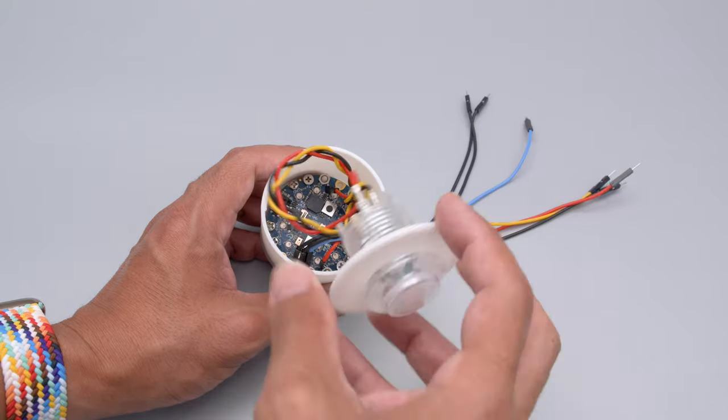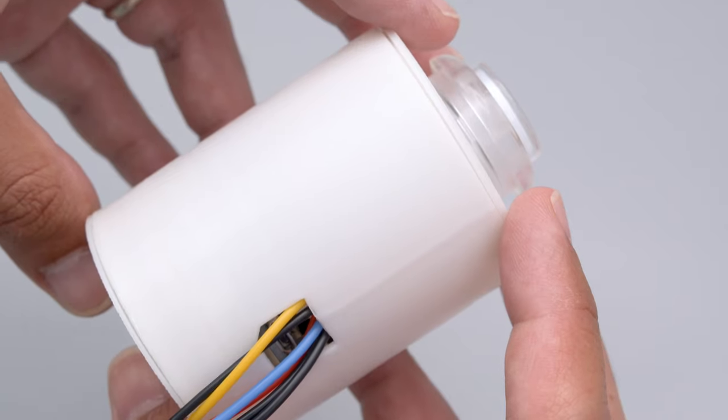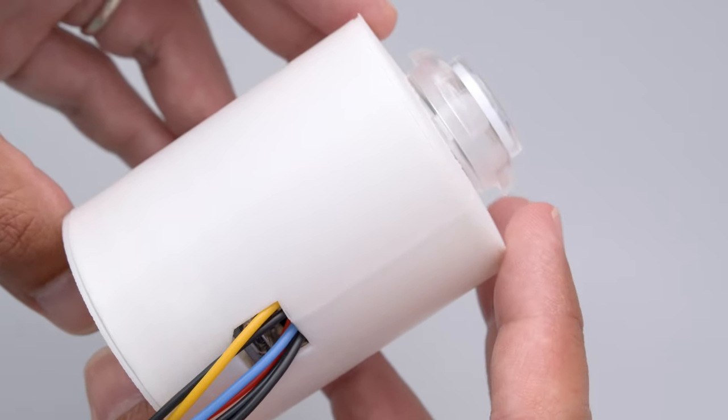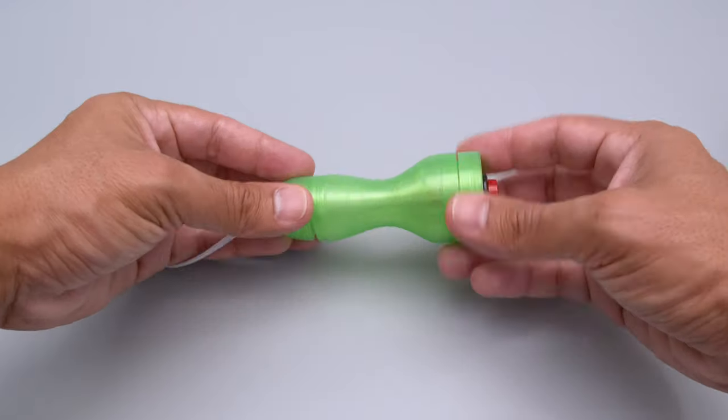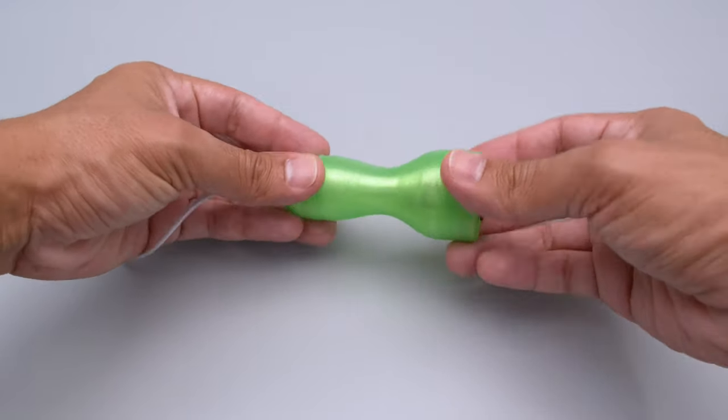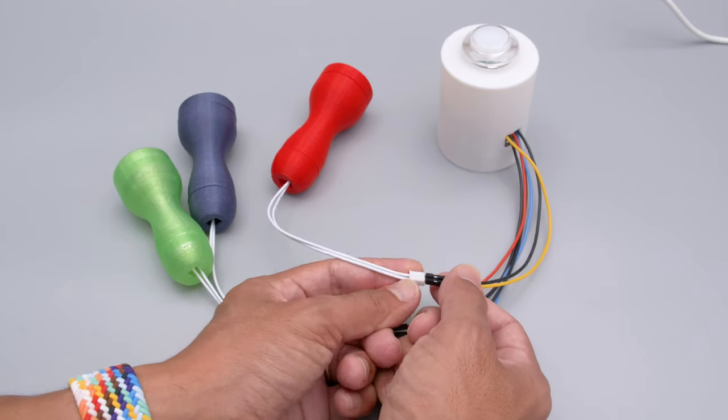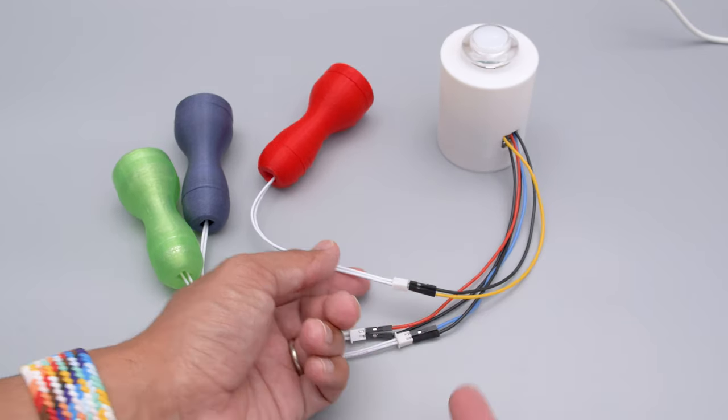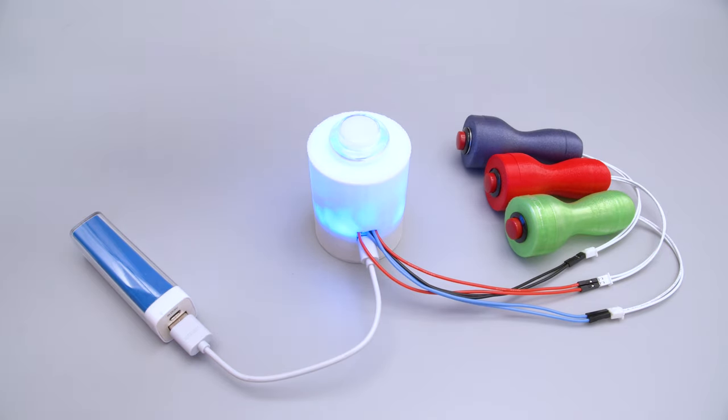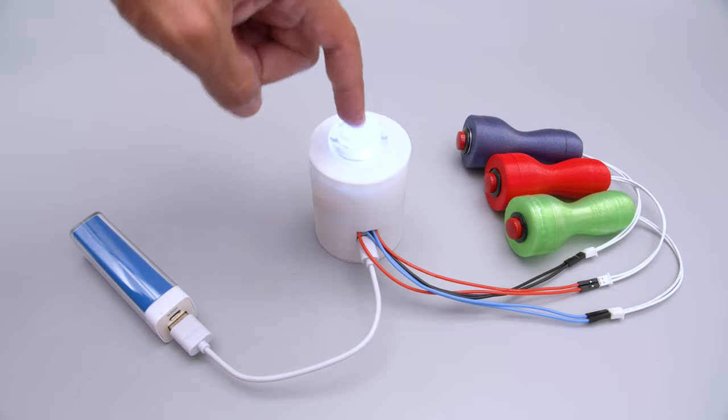Once installed the top cover snap fits over the enclosure. The buzzers feature a similar assembly but with a threaded screw on top. The jumper cables can then be connected by plugging them into the JST connectors. It's a fairly modular assembly so you can easily disconnect things and put them back together.